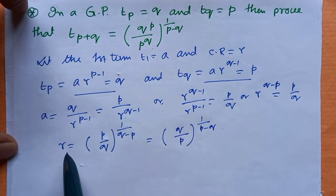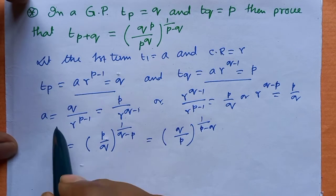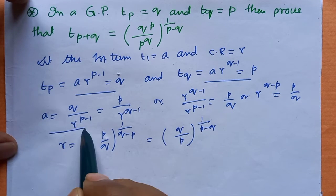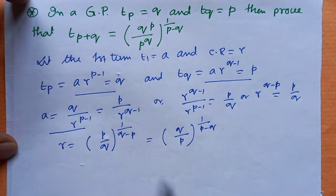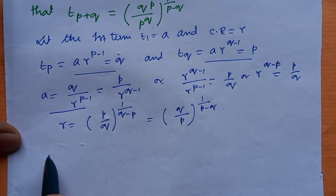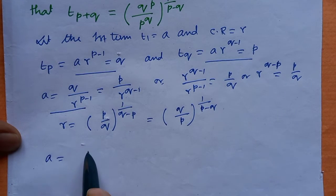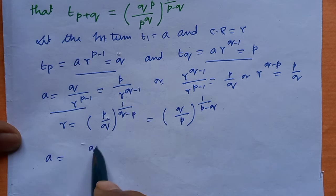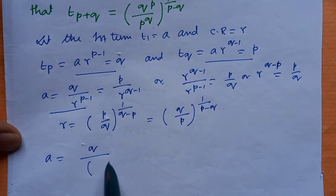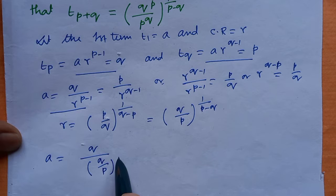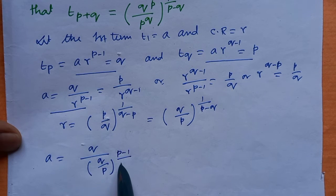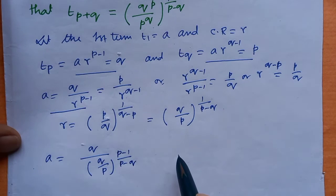Putting the value of r, we can write a equals q divided by (q by p) to the power (p minus 1) by (p minus q).